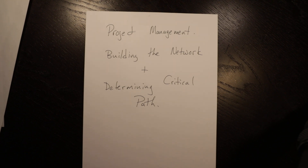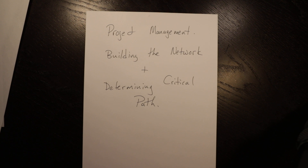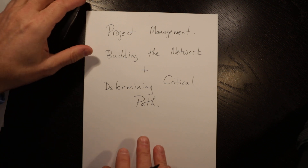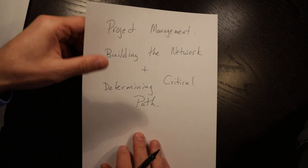Hello, in this video we're going to talk about project management and specifically about building the network and determining the critical path. We're looking at precedence relationships and drawing that visual or graphical network, doing the pass from left to right for earliest start and earliest finish time, then the pass from right to left for latest finish and latest start. This is an example of how you might execute one of those if you have a question on project management. So let's get started.